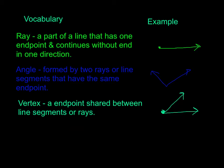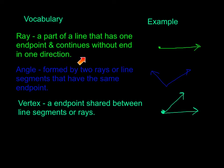Our next vocabulary word is a ray: a part of a line that has one end point and continues without end in one direction. As you can see from our example, we have one end point and then the line continues in one direction.